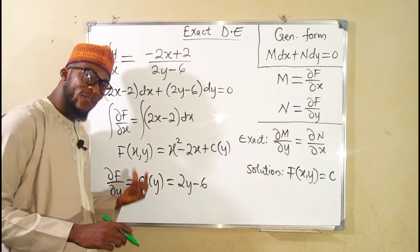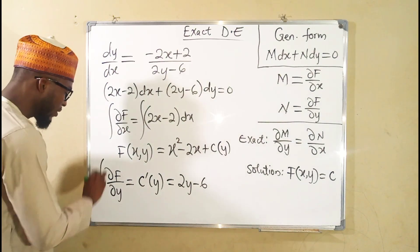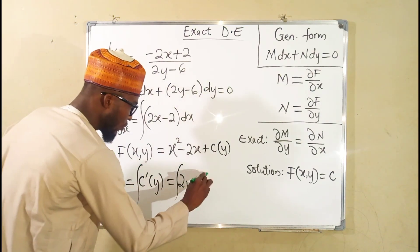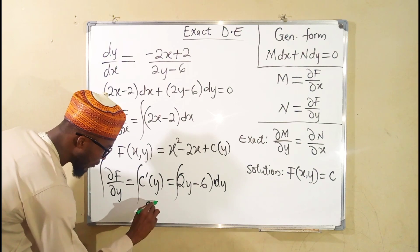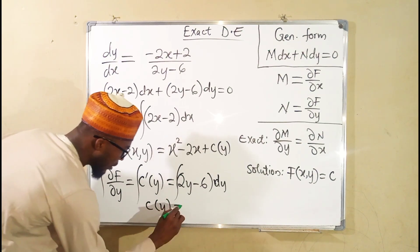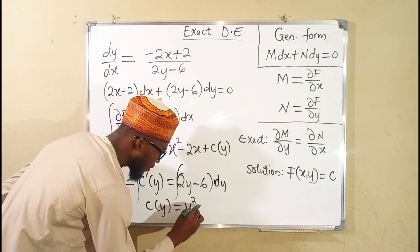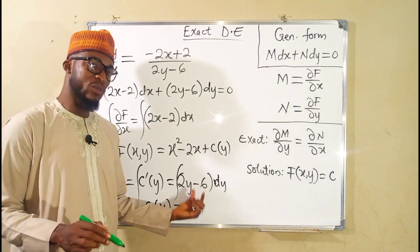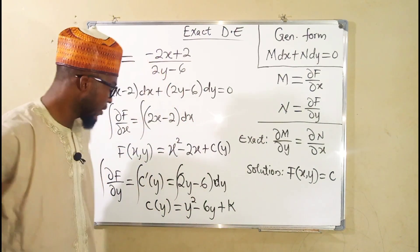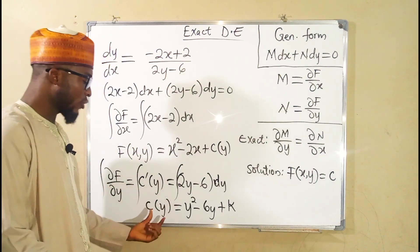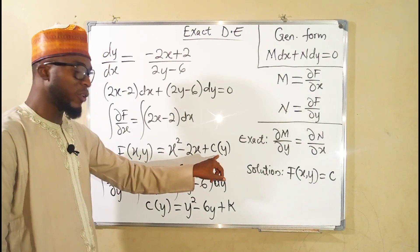We are looking for c(y), not c prime of y, so we integrate both sides with respect to y. Integrating the left-hand side gives c(y). On the right, integrating 2y gives y squared, and integrating 6 gives 6y, so c(y) equals y squared minus 6y plus a constant of integration k. This time it is purely a function of y, not implicit.